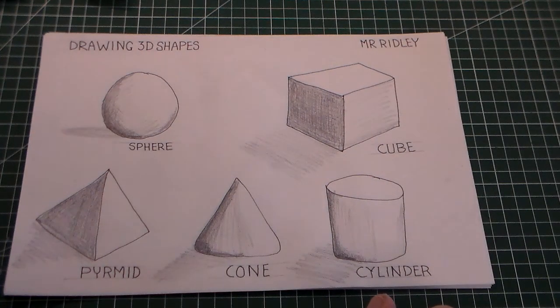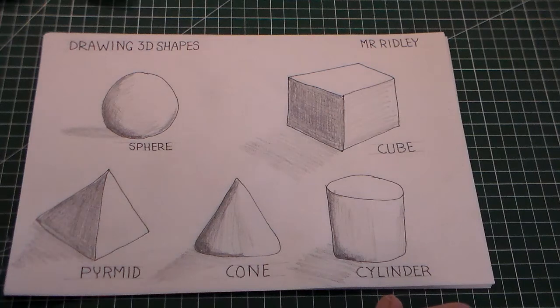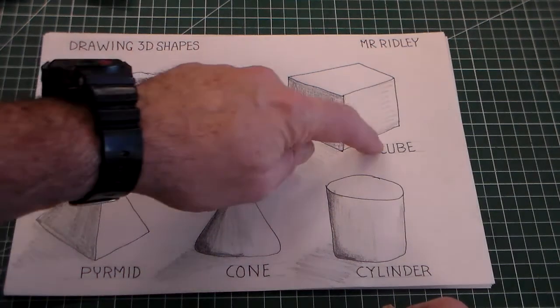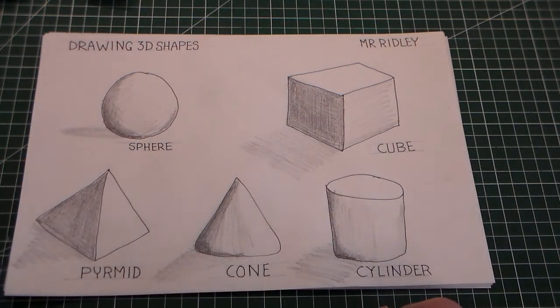Hello and welcome to this design and technology lesson. In this lesson we're going to be drawing some 3D shapes. We can see the 3D shapes we're going to draw here. We're going to draw a sphere, a cube, a cylinder, a cone and a pyramid. And we're going to try and shade them to make them look as 3D as possible.